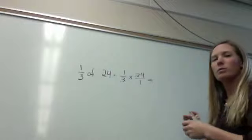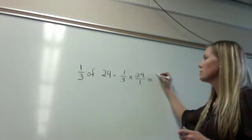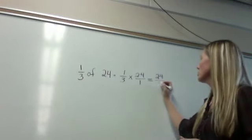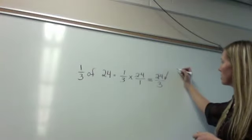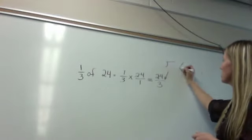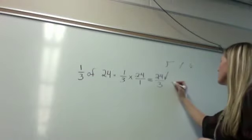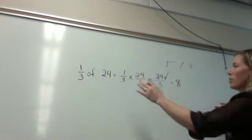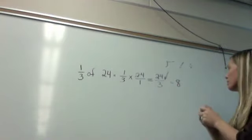So if I multiply across, I have 1 times 24, which is 24, and 3 times 1, which is 3. Now, this last step, if you look at this symbol right here, if you remember, that also means division. So 24 divided by 3 is equal to 8. So 1 third of 24. If I took 24 and divided into thirds, it would be 8.